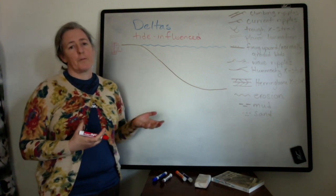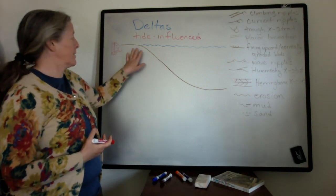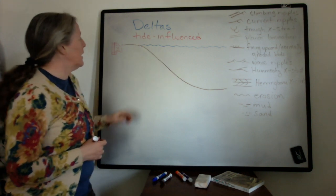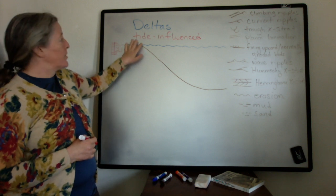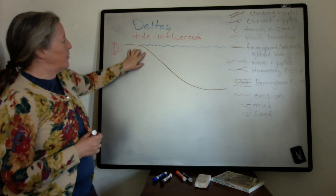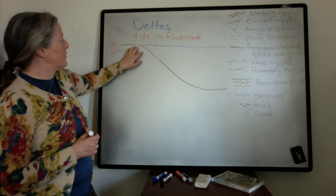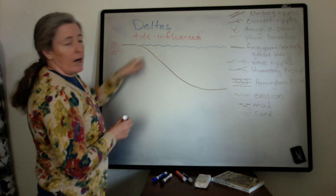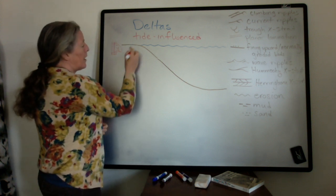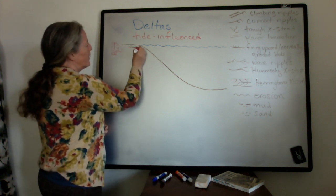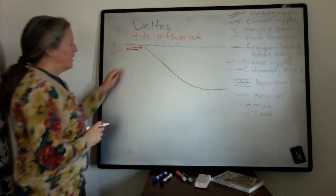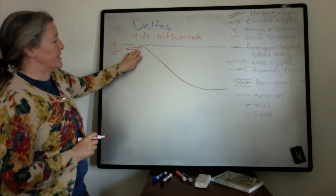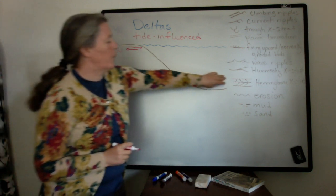Tides can be a very important process transporting sediment from rivers offshore and along the shoreline as well. And in the case of tide influenced deltas, the river mouth and that junction between the river mouth and the ocean has very high tidal flows. So in this particular zone, depending on the flow of the tide, there's a lot of sedimentary characteristics typical of tides.